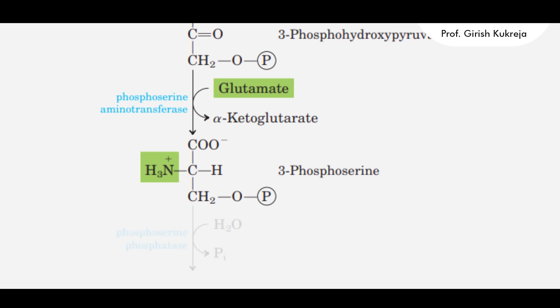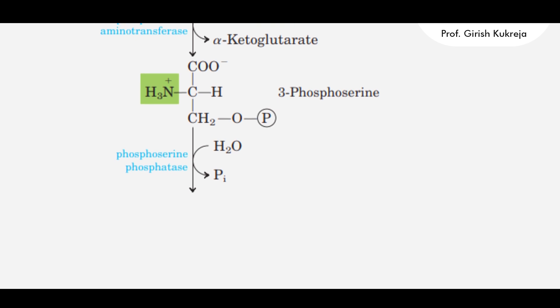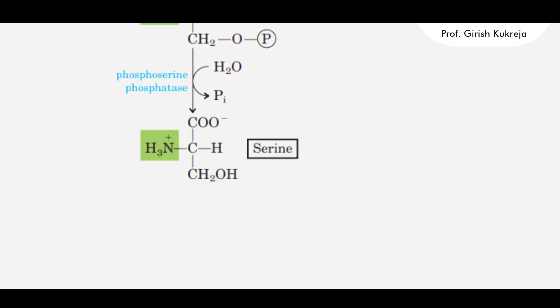3-phosphoserine is hydrolyzed and forms serine by the removal of phosphate by phosphoserine phosphatase. This results in the formation of the first amino acid of this family: serine.